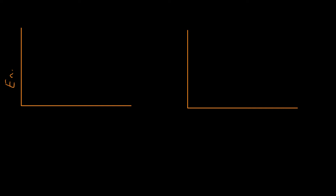We always plot it on an axis with energy on the y-axis. On the x-axis we normally don't write anything, but what it actually represents is the progress of the reaction - you could think of it as over time, but normally we don't really care about the time on the bottom.